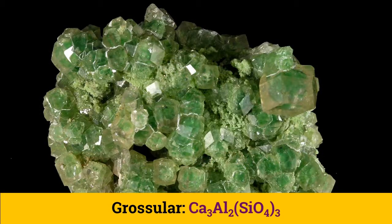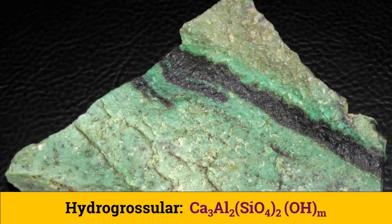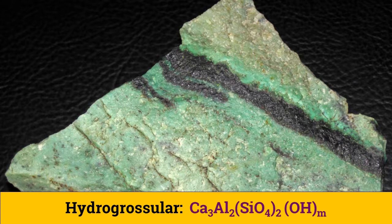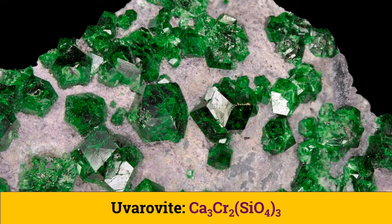Good specimens of grossular usually come from metamorphosed limestone where calcium is abundant and iron is absent. Grossular is usually green but may also be colorless to yellow. The grossular mineral may also be hydrated, and then it is called hydrougrandite. Hydrous garnets may contain H2O up to 8.5%. Uvarovite has a brilliant emerald green color which comes from the chromium ion, and is found in serpentines rich in chromite.